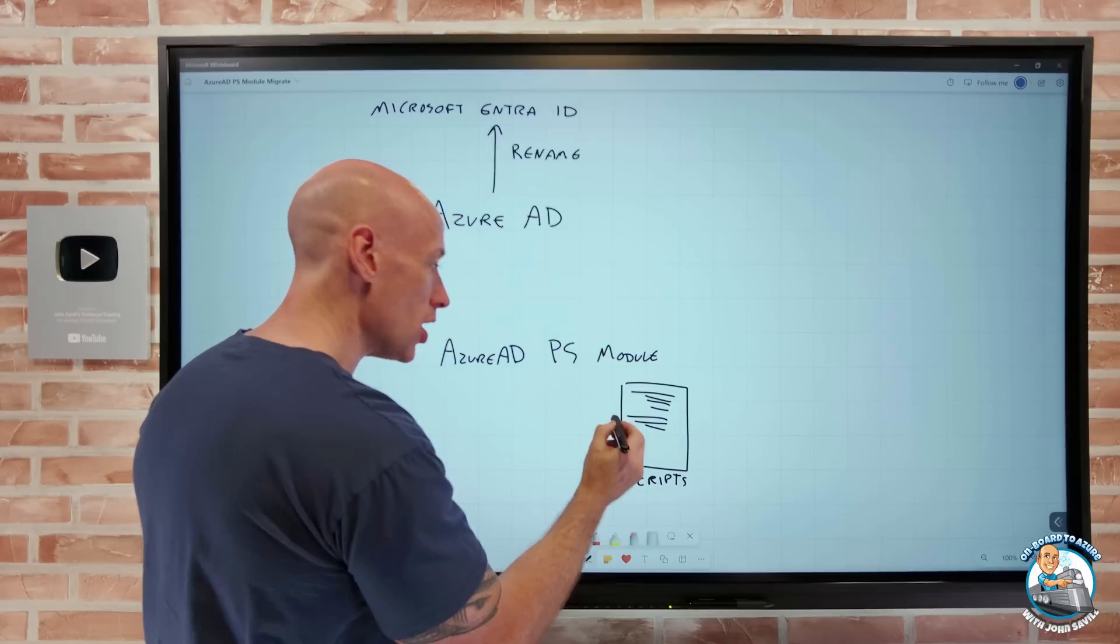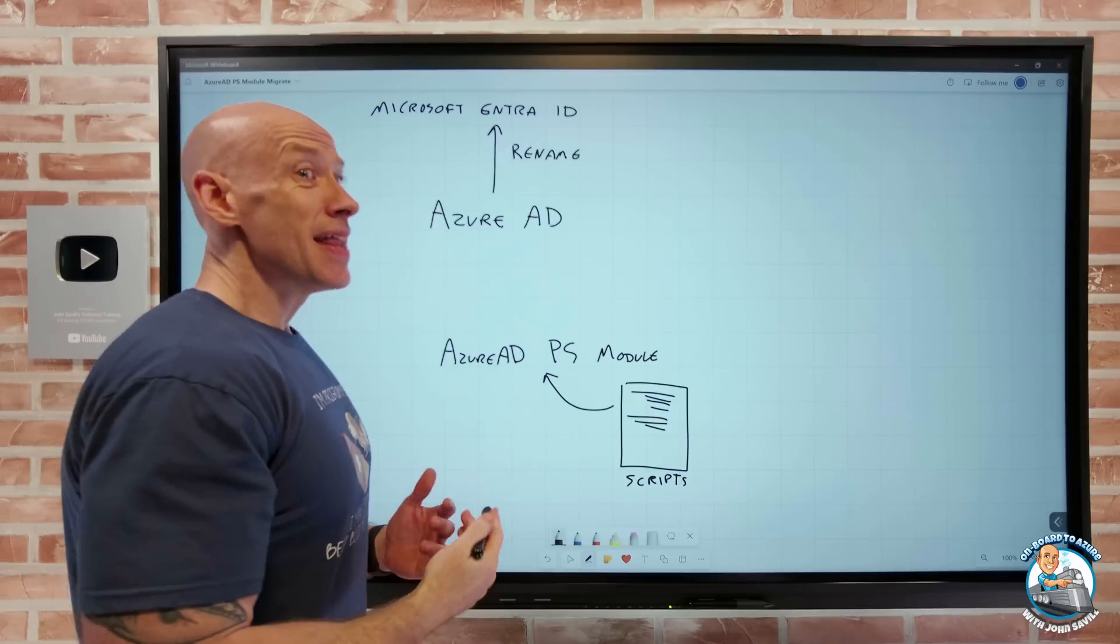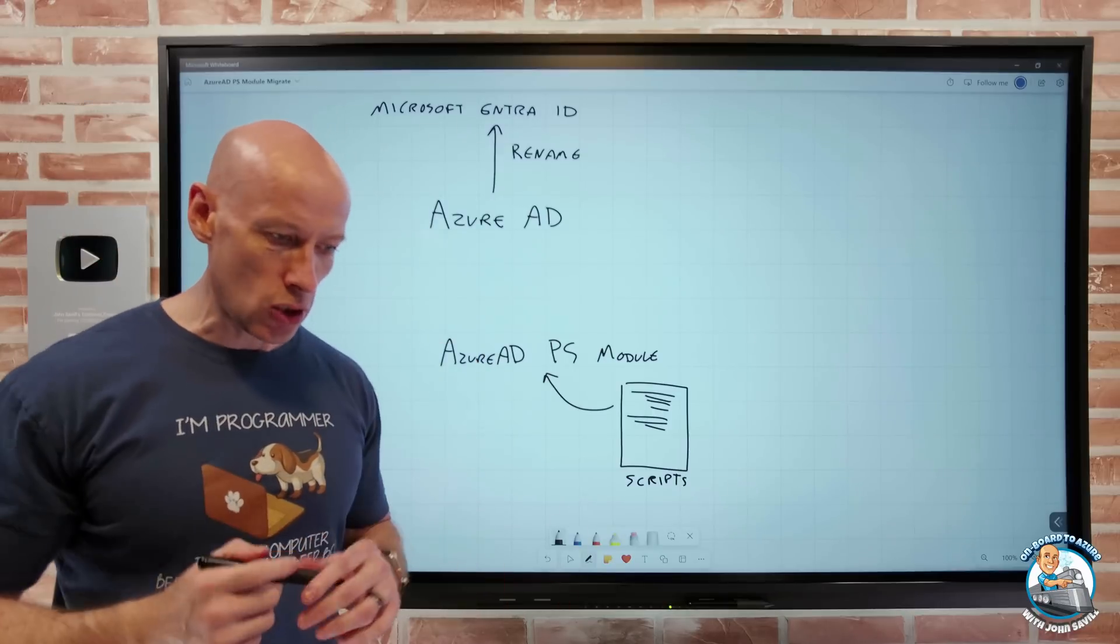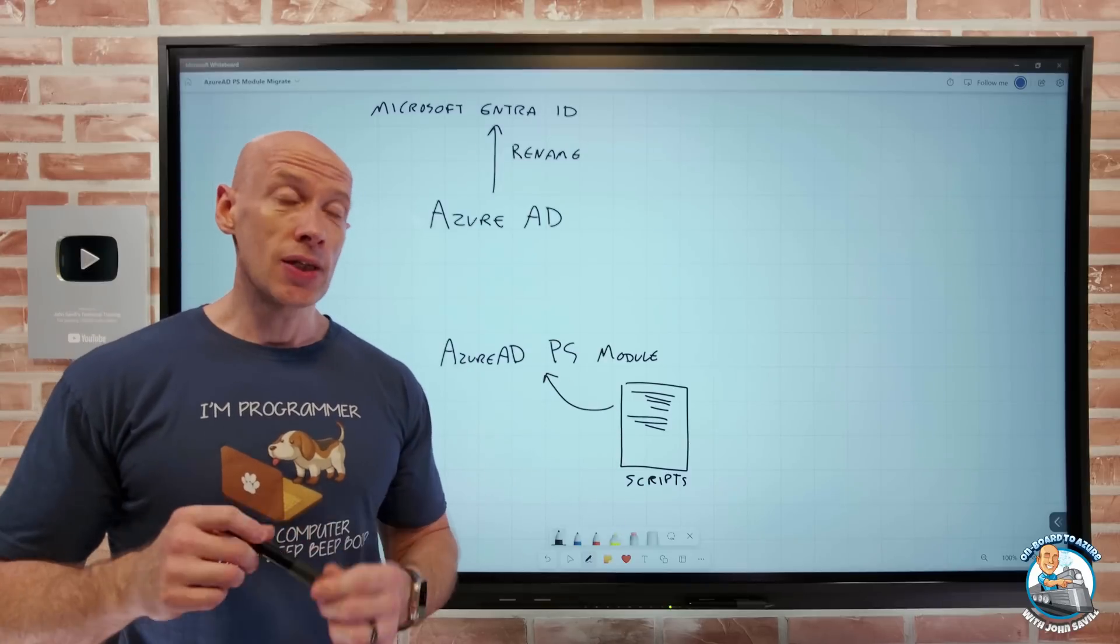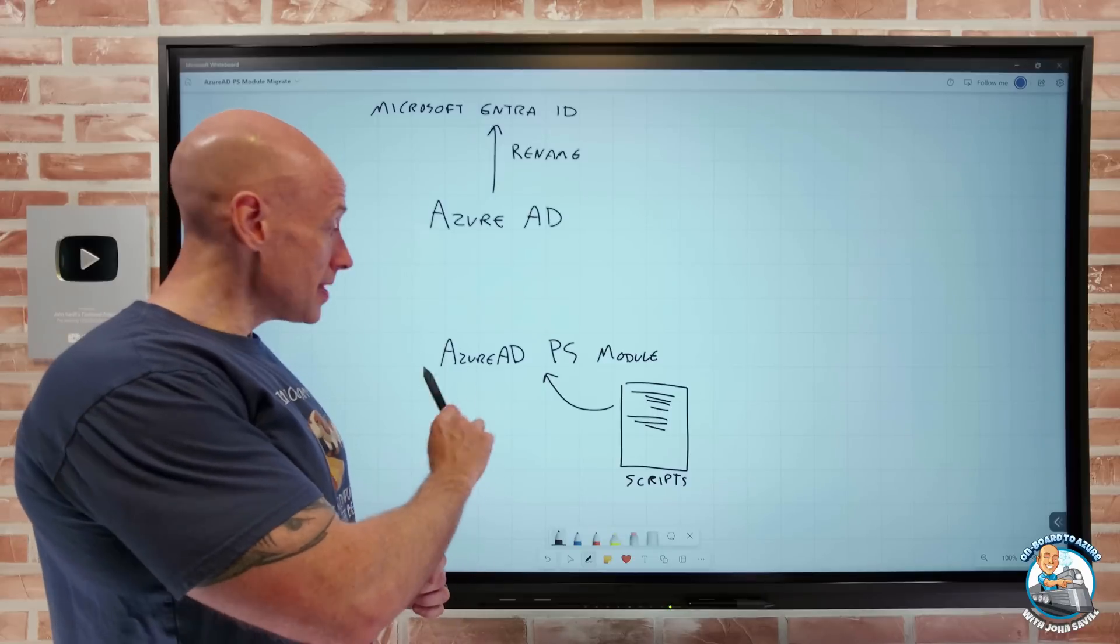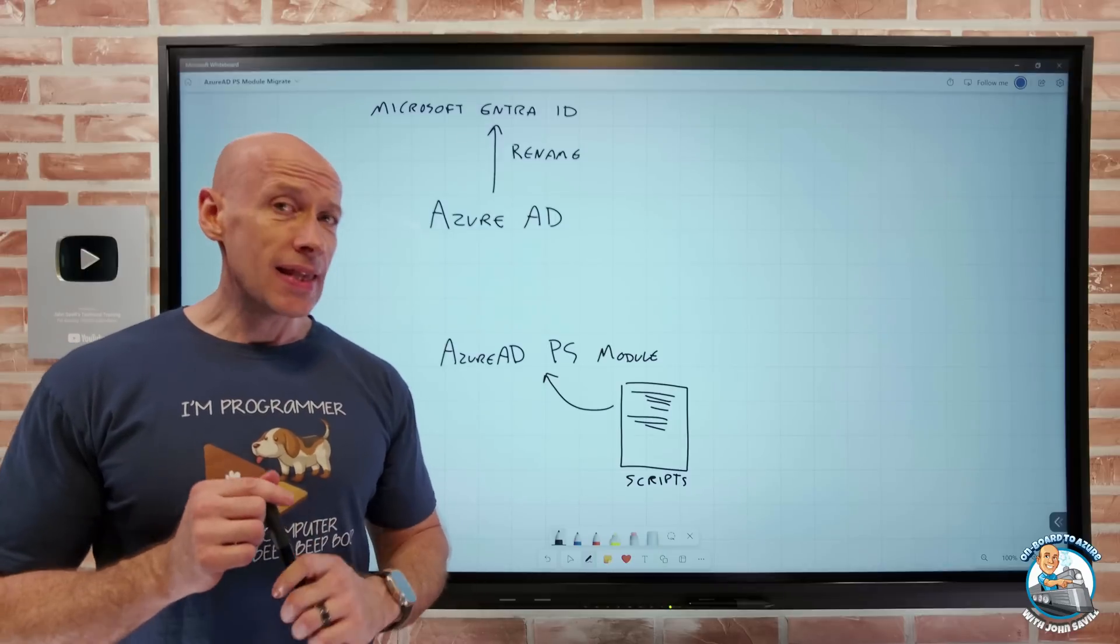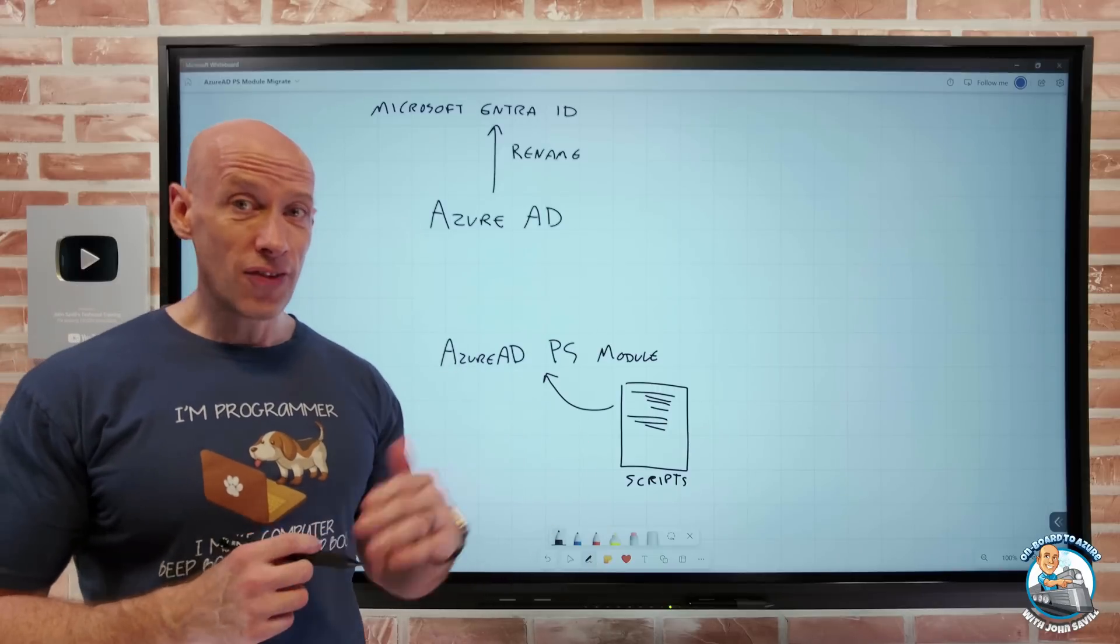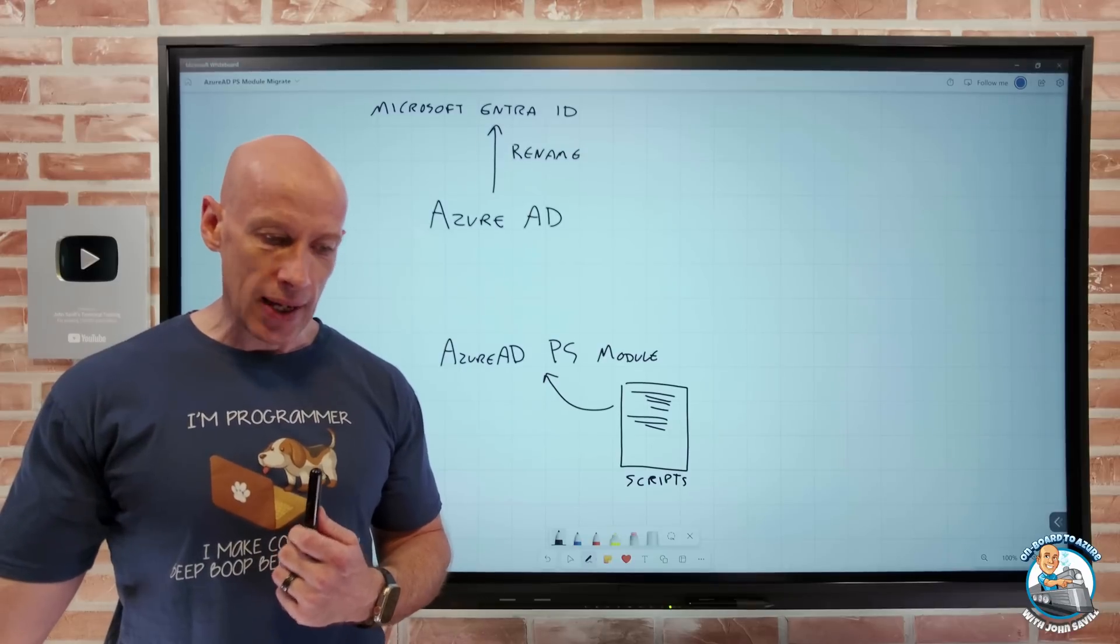The concern is, if you're renaming Azure AD to Microsoft Entra ID, that means you're going to rename the Azure AD module and I'm going to have to go and update all of my scripts. That's going to be a huge painful amount of work. So there's really a good news, bad news situation here. The good news is they will not be renaming the Azure AD PowerShell module. The bad news is they're not renaming it because this module has been on a deprecation path for a very long time.